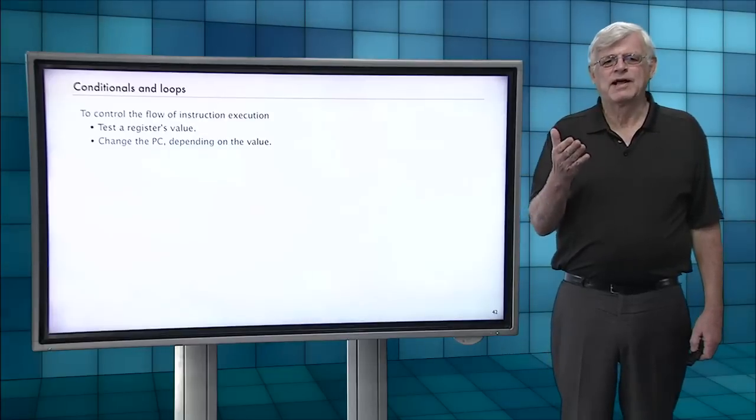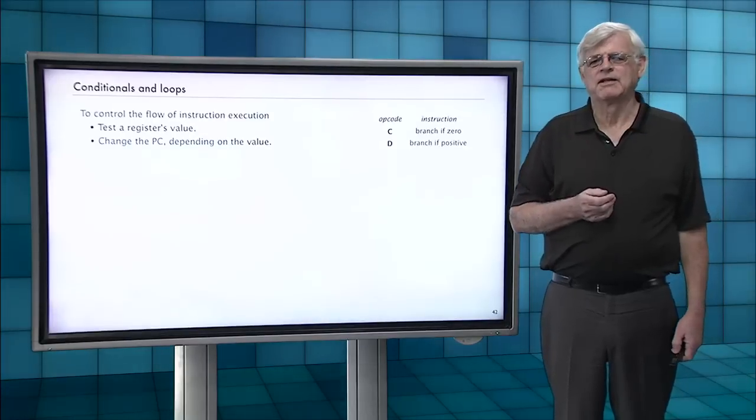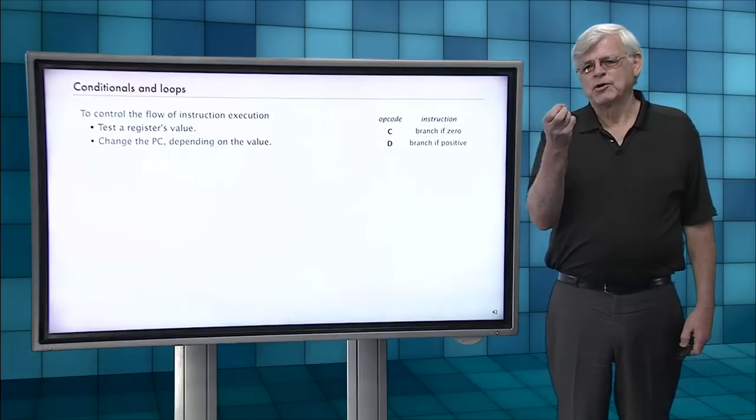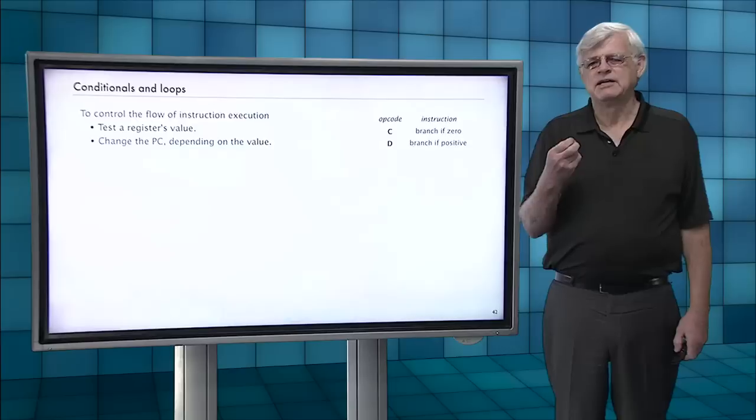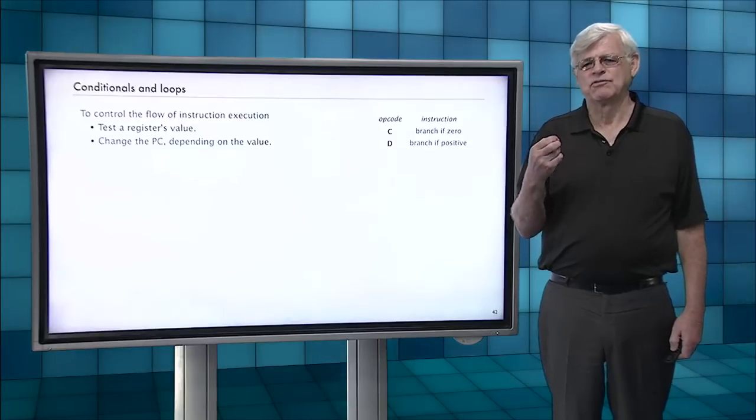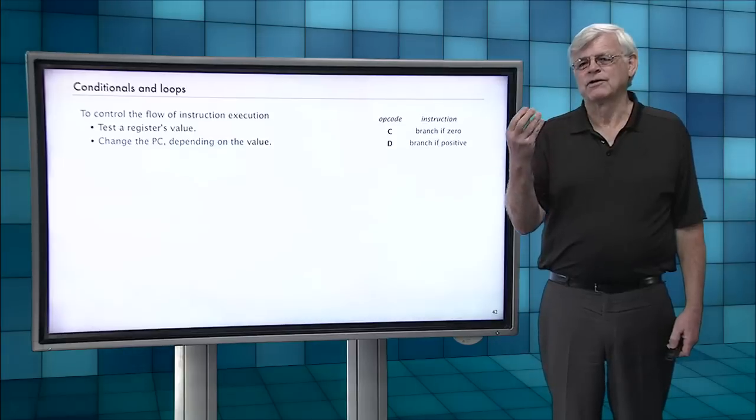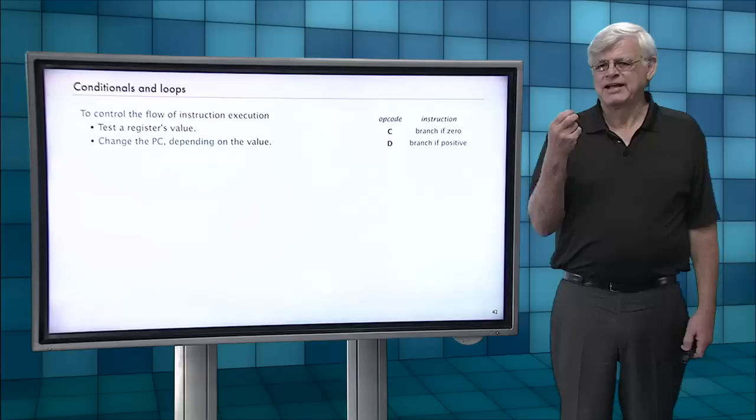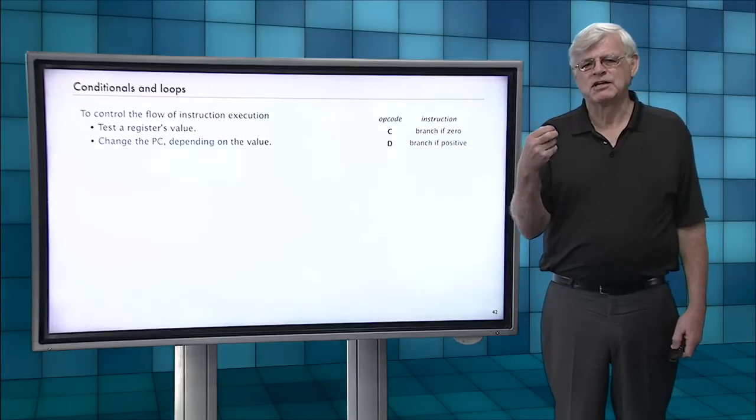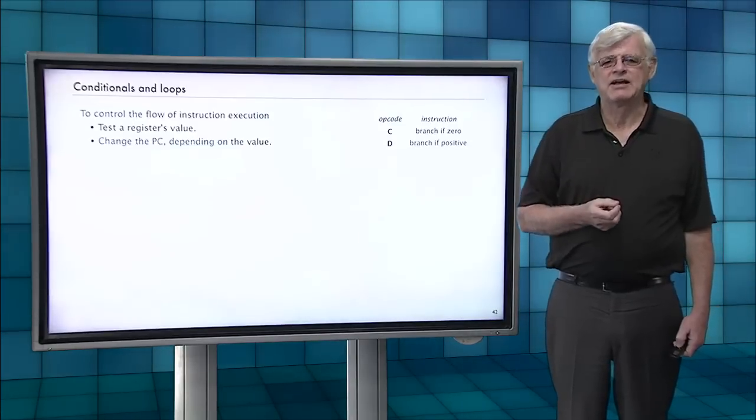We test a register's value and change the PC depending on the value. So that's opcode C and opcode D, branch if zero and branch if positive. These instructions take a register and an address and they test that register, and depending on the result, they change the PC to that address.